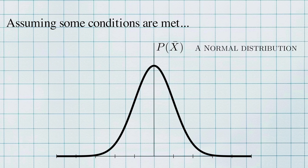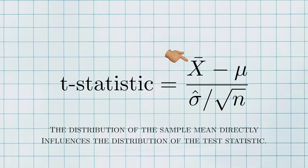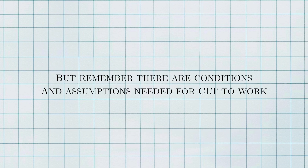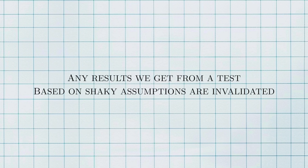Furthermore, CLT tells us that the sample mean will have this normal distribution no matter how the underlying data itself is distributed. In the end, we'll still have a reliable distribution to base our hypothesis tests on. And the sample mean is important because it's used to calculate the statistic for many classical tests. But like I mentioned before, there are conditions and assumptions needed for CLT to work. Outliers, or rather having too many outliers, threaten these assumptions. Once the assumptions are invalidated, the results of any hypothesis test that uses CLT are invalidated. It won't matter what decision we make either way.